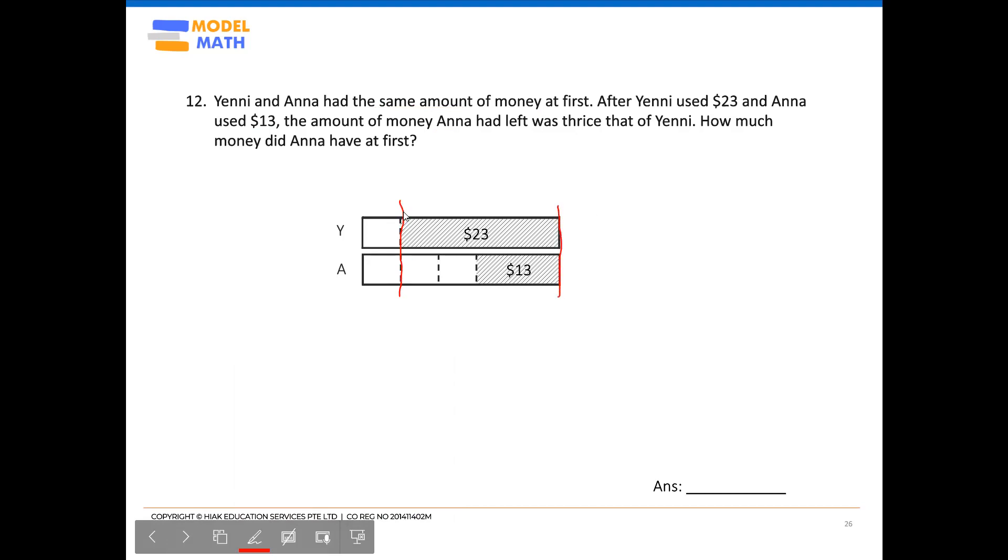So the $23, which covers the whole distance, would be the whole. Whereas for the right side in Anna's model, the $13 will be one part, and naturally the other part would be the two units that we are looking at.